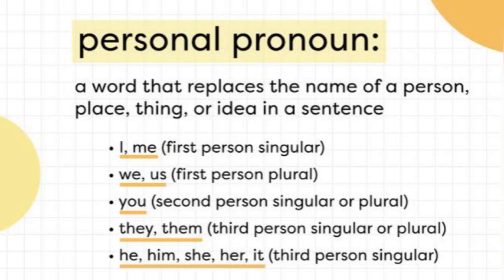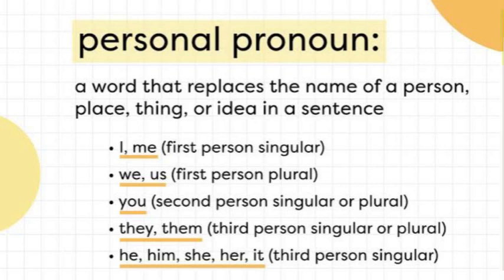امید کرتا ہوں pronoun کی مکمل سمجھ آگئی ہوگی۔ اب آتے ہیں اس کی types کی طرف — سب سے پہلے ہمارے پاس ہے personal pronoun۔ Personal pronoun کے بارے میں لکھا ہے: 'a word that replaces the name of a person, place, thing or idea in a sentence' — یعنی کسی شخص، جگہ، چیز یا idea کے نام کو replace کرتا ہے۔ اس میں 'I' اور 'me' — first person singular کے لیے — subjective case میں 'I'، objective case میں 'me'۔ 'We' اور 'us' first person plural ہے — جمع متکلم کی ضمیر۔